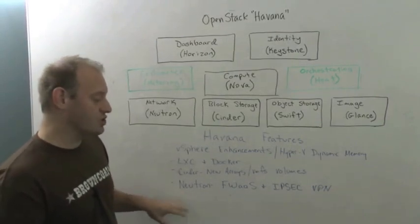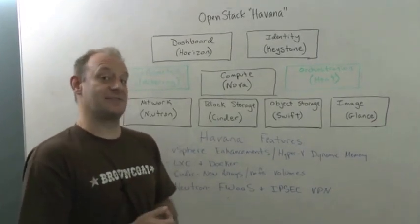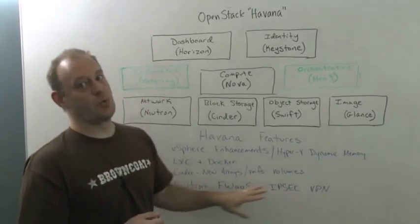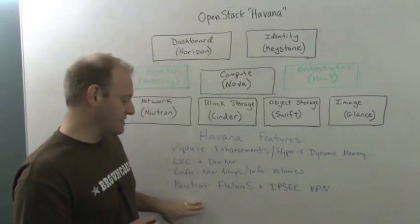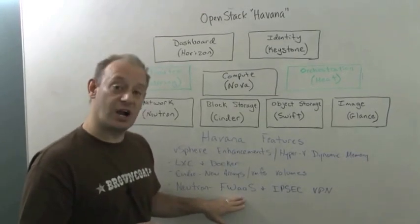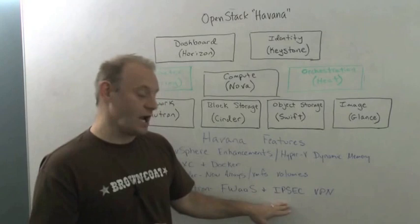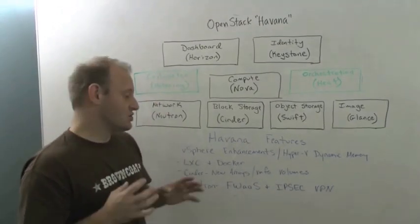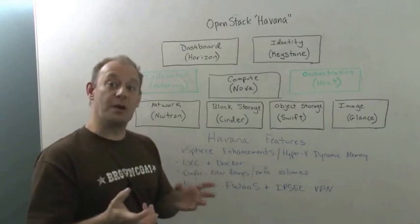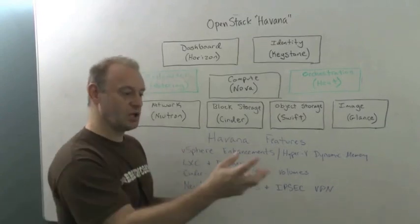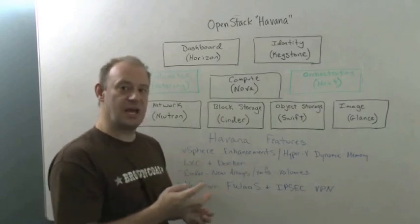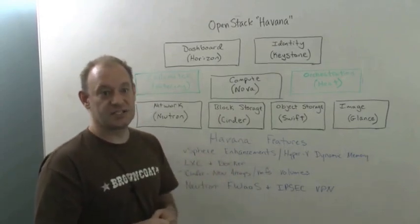And lastly, we have Neutron. Neutron actually probably has the most enhancements of any of the projects, and there are way too many to list here. But one of the biggest ones is they're actually bringing in Firewall as a service and IPsec VPNs as well. So we're really allowing you to almost do that very hybrid cloud-like solution of putting your OpenStack cloud somewhere else, VPNing, and having a firewall to protect it.